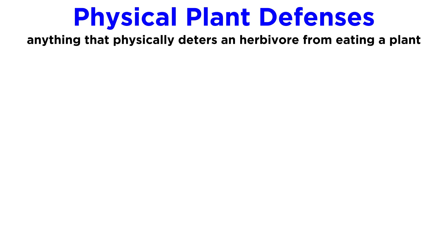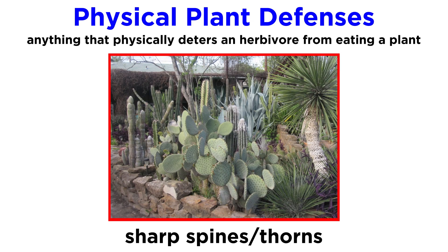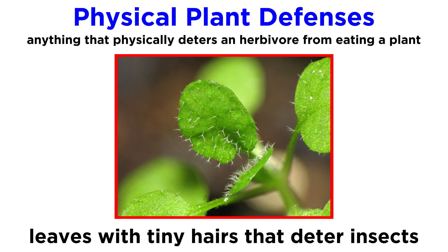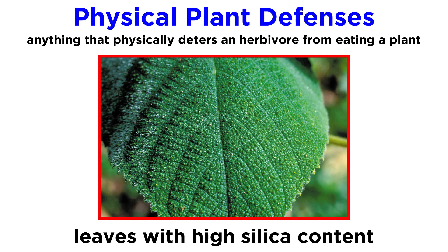Plant defenses come in two main types: physical defenses and chemical defenses. Physical plant defenses are things that would physically deter an herbivore from eating a plant. Some examples are spines or thorns, like on honey locust trees or cacti. Plants can also have a tough outer coating, such as bark or a waxy substance that prevents herbivores from being able to bite through a plant's tissues. When plants are working to deter insect herbivores, they can enact much smaller physical defenses too. Many leaves have tiny hairs on them that feel soft to our hands but work like giant thorns against insect bodies. Some plants also have high silica content in their leaves. Chewing on leaves full of silica grinds down the mouth parts of insects and prevents them from eating effectively, or may even cause them to starve to death.